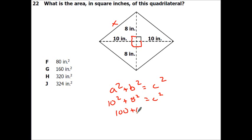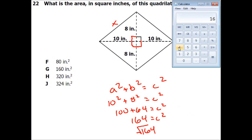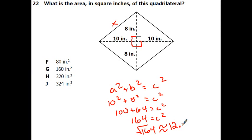So it's going to be 100 plus 64 equals c squared. 100 plus 64 is 164. And the opposite of a square is a square root, so this is the square root of 164. 164 square root is about 12.8. Remember, a little squiggly equal sign means about. So each one of these sides is 12.8.